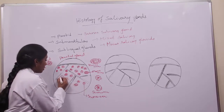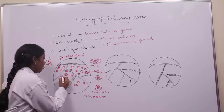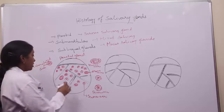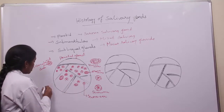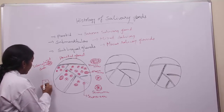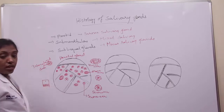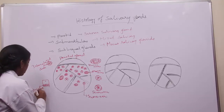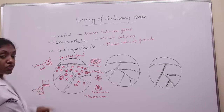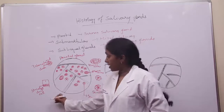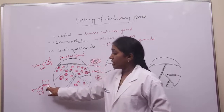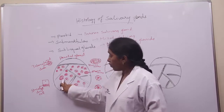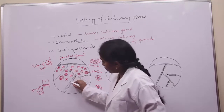From the intercalated ducts, you will also be able to see the striated ducts. Because of the striations in appearance, these ducts are called striated ducts. When you take a cell of the striated duct, the base of the cell shows basal striations — that's why it is called a striated duct — and the nucleus is situated at the top.